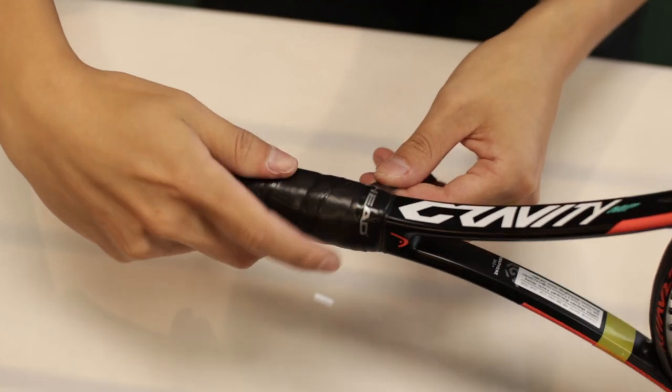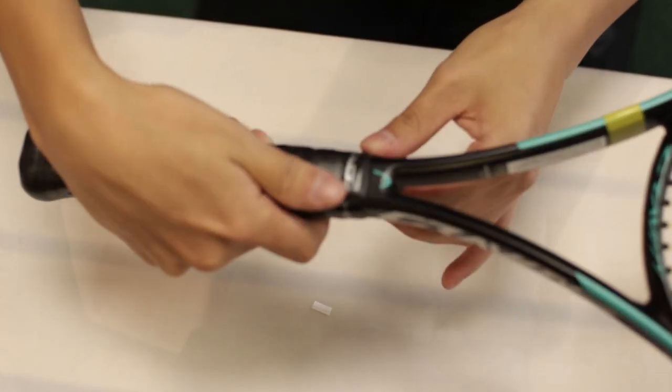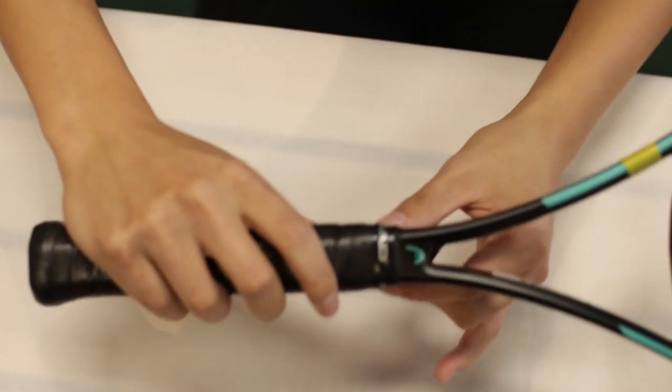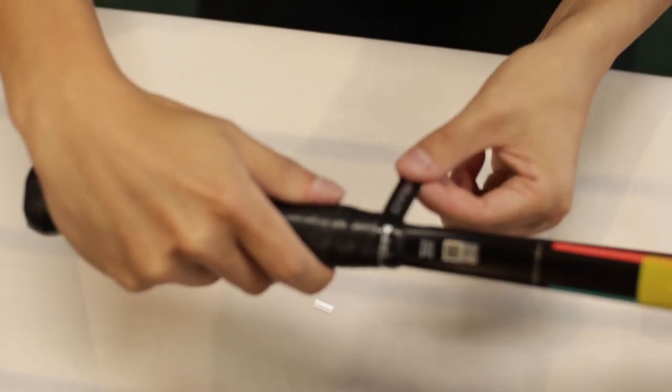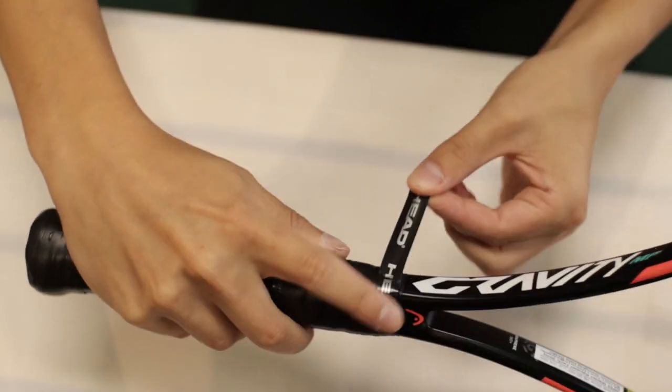And as we finish this we want to pull just a little bit on the tape to make sure we have a smooth application. Don't pull too hard because some of these finishing tapes are a little bit thin and they tend to tear.